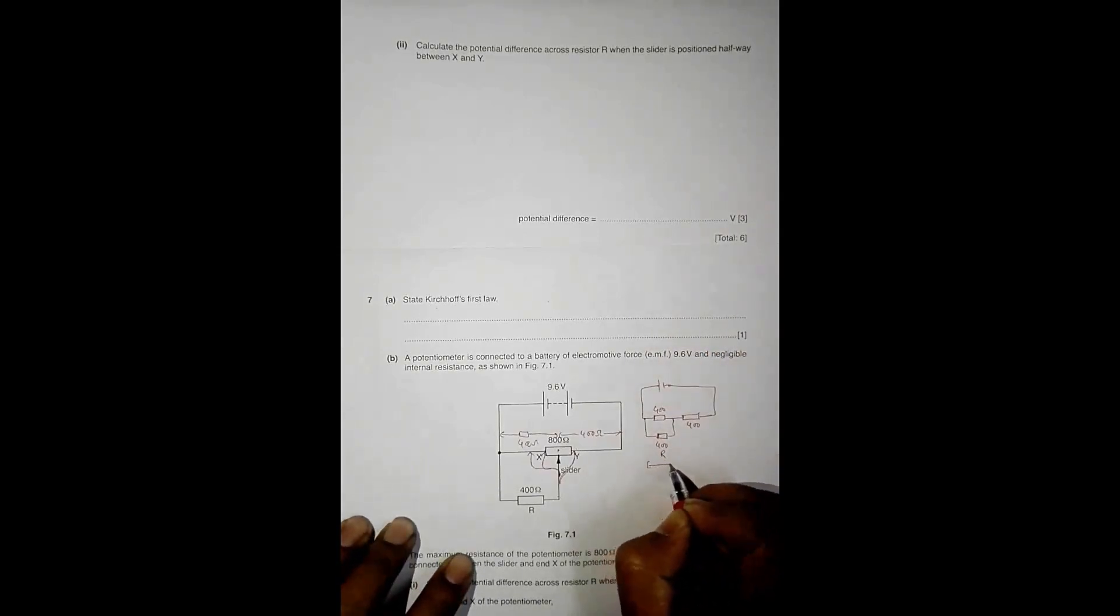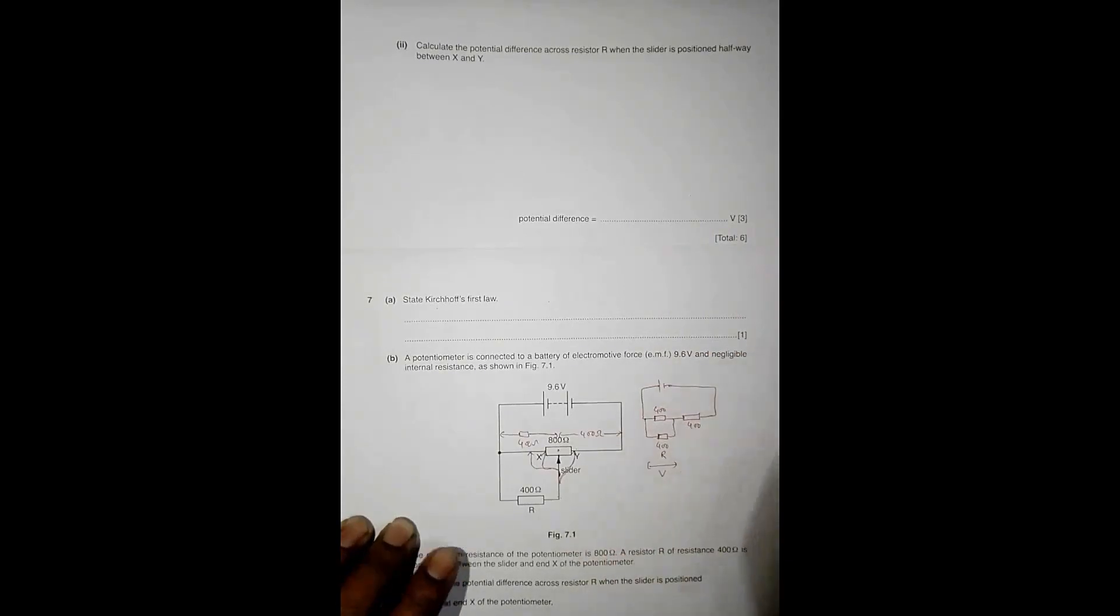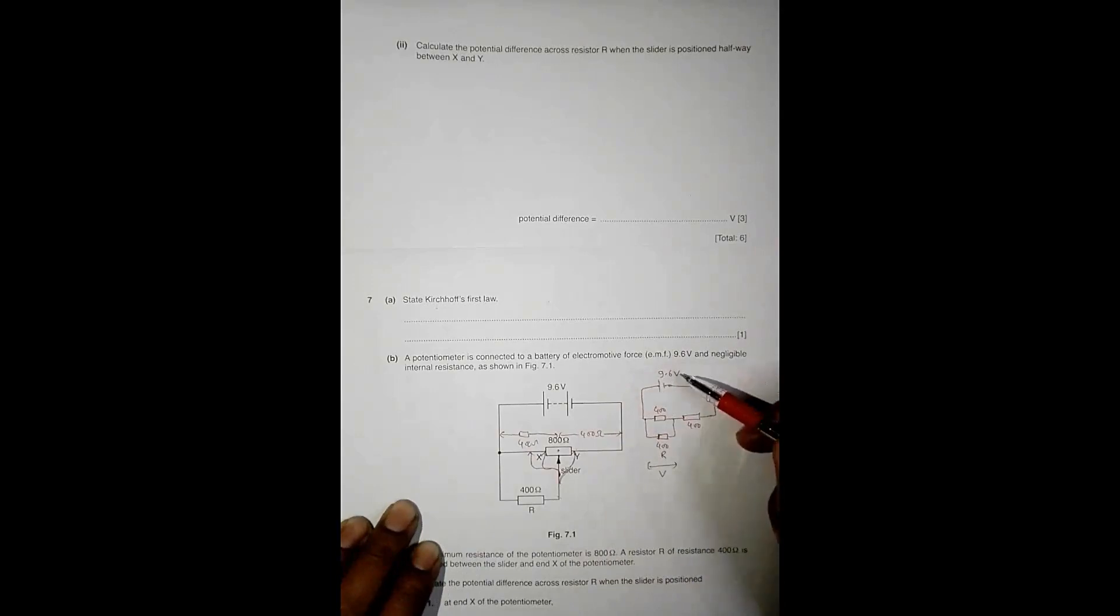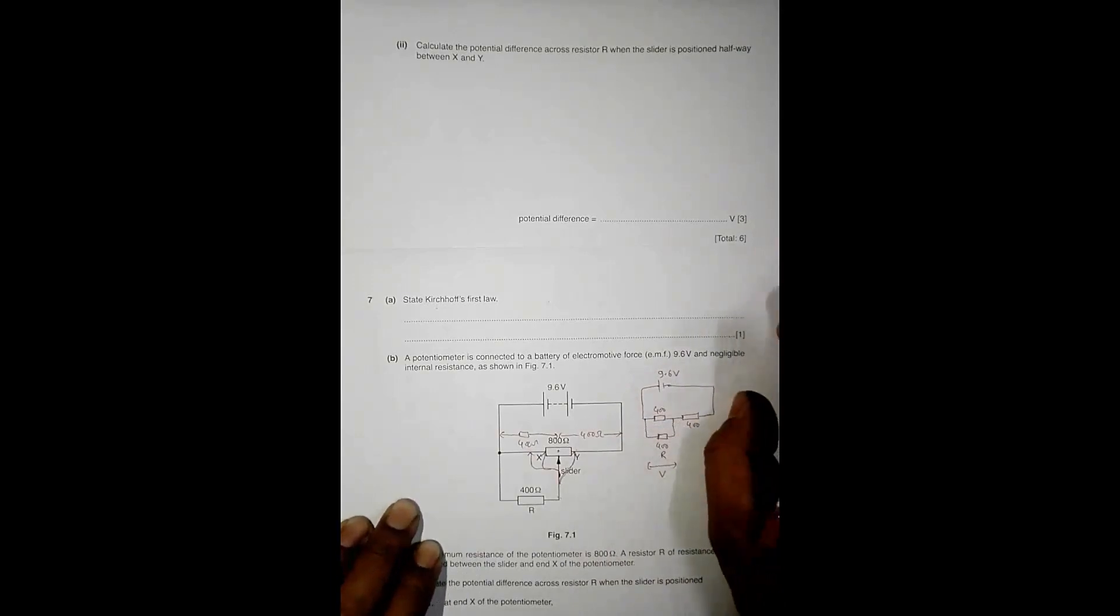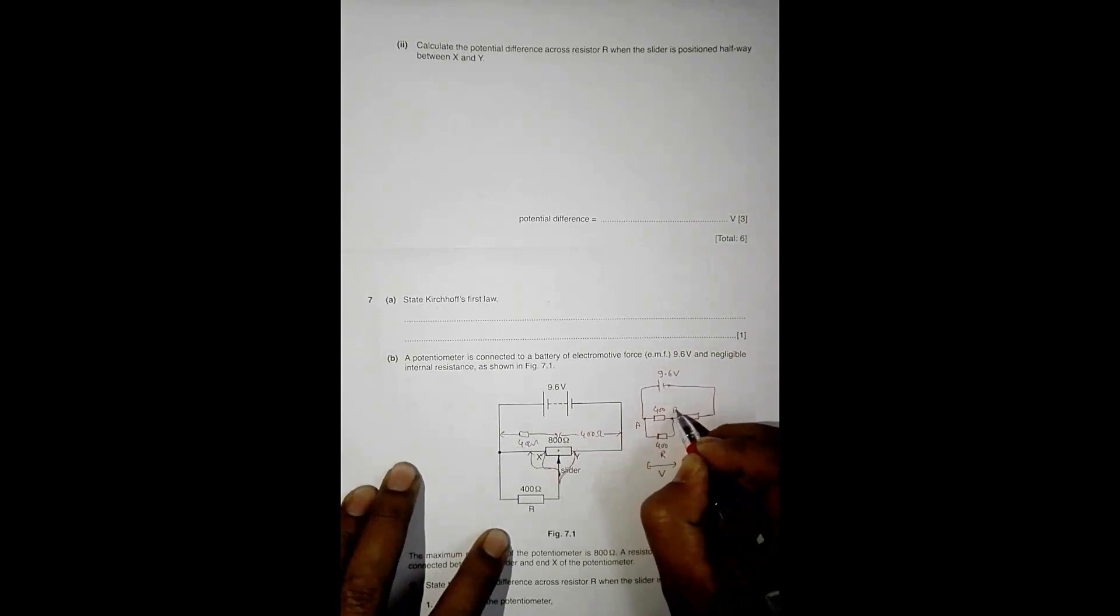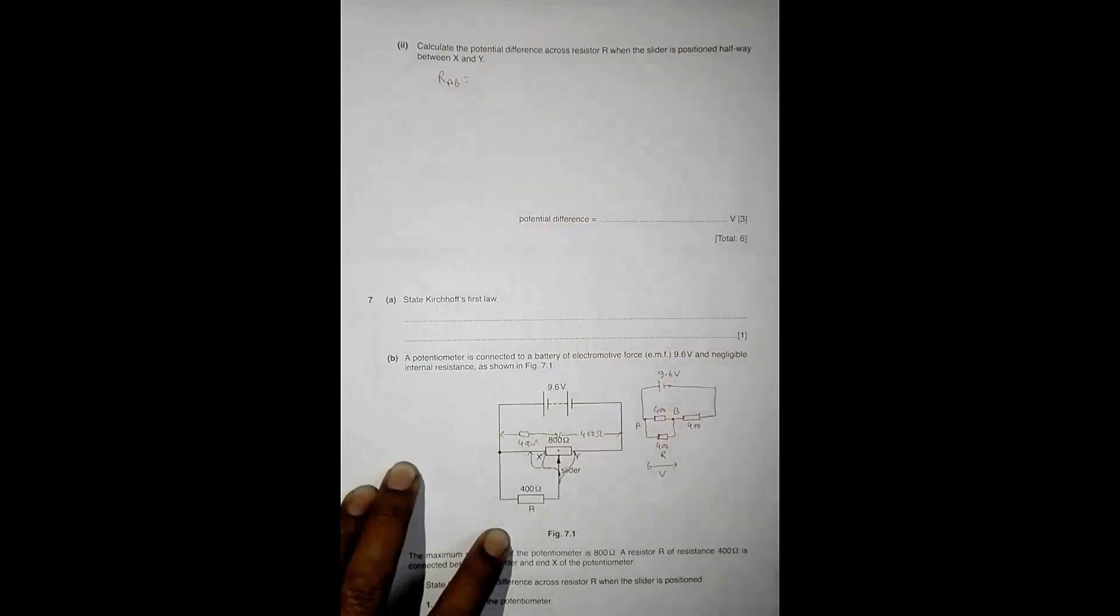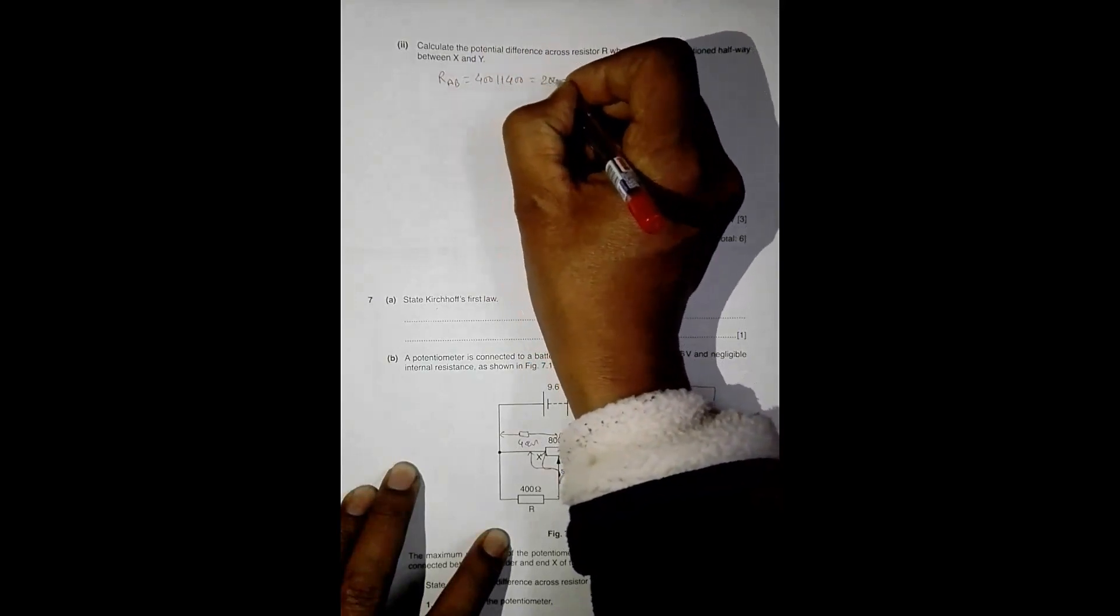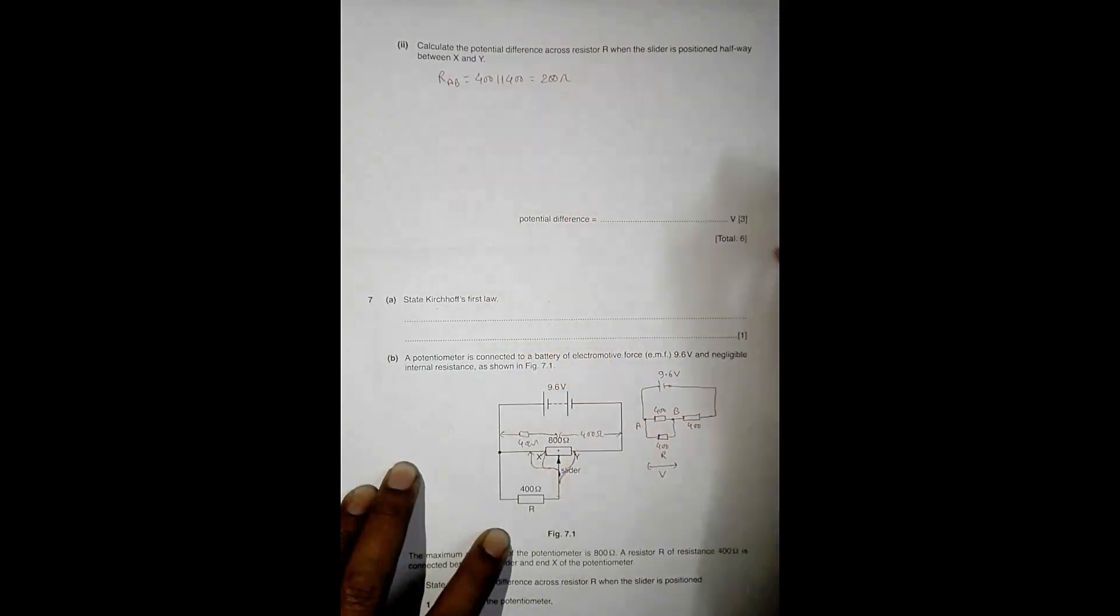So now we have to find the PD across here. This is 9.6 volts. So first of all we have to find the total resistance posed by this thing and then the current. So the total resistance from here to here, let us say this is A and this is B. So we have R_AB is equal to parallel of 400, so 400 parallel 400, that's equal to 200 ohms.